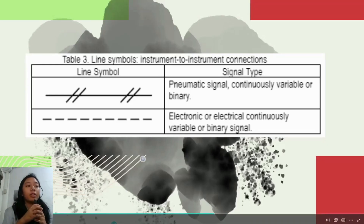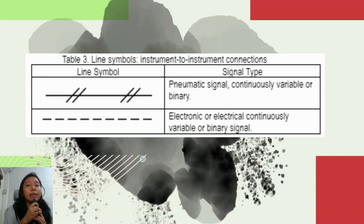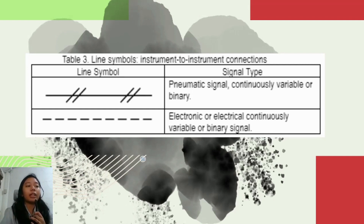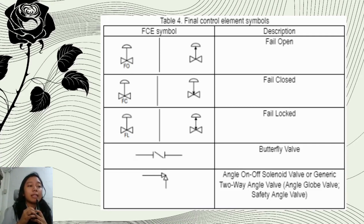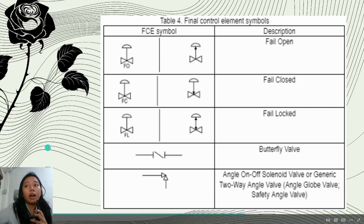Table 3 represents line symbols for instrument-to-instrument connections. The first line symbol is the pneumatic signal, continuously variable or binary. Next is the electronic or electrical, continuously variable or binary signal. Table 4 represents final control element symbols. The first FCE symbol is fail open, next is fail closed, next is fail locked, next is butterfly valve, and lastly the angle on-off solenoid valve or generic two-way angle valve.